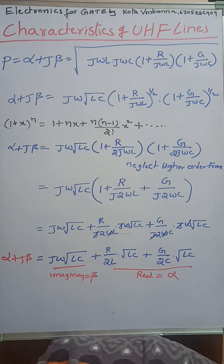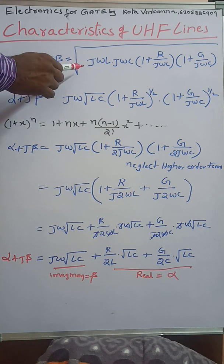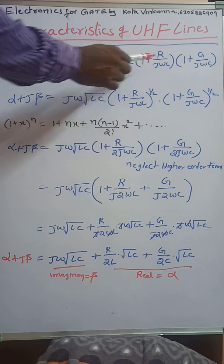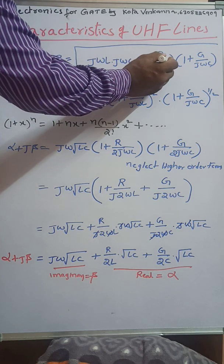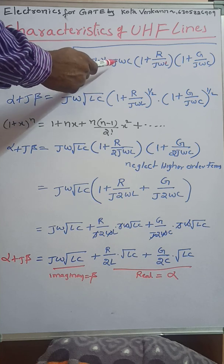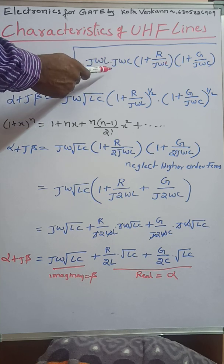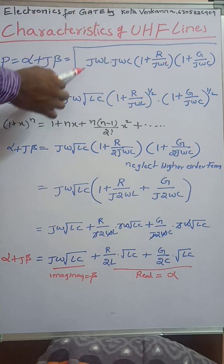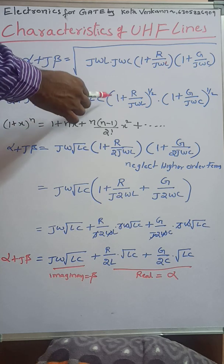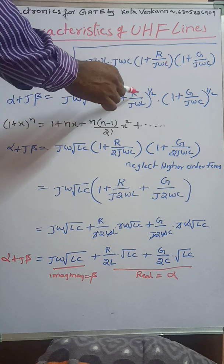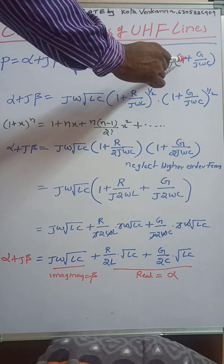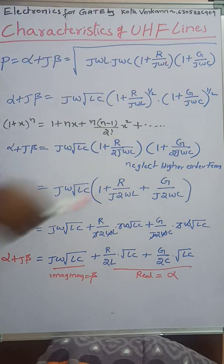So P equals alpha plus J·beta equals square root of J·omega·L into J·omega·C, multiplied by (1 + R / J·omega·L) and (1 + G / J·omega·C). Since J·omega·L into J·omega·C gives J·squared·omega·squared·LC, and J·omega comes out of the square root, we get J·omega·√(LC) multiplied by (1 + R / J·omega·L)^(1/2) and (1 + G / J·omega·C)^(1/2).